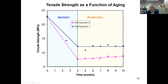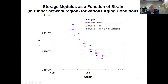Here is our DMA strain sweep storage modulus as a function of strain. The unaged sample is shown, then 2.5 weeks of aerobic, then four weeks of aerobic, then four weeks aerobic plus six weeks anaerobic. There is no change between the four-week and ten-week marks, indicating no further change during anaerobic aging.